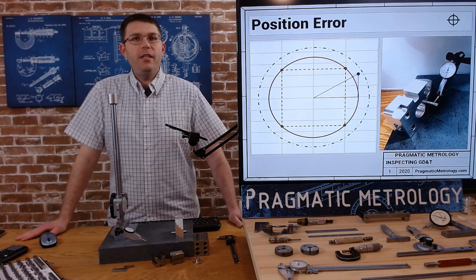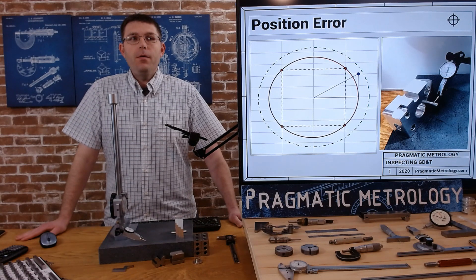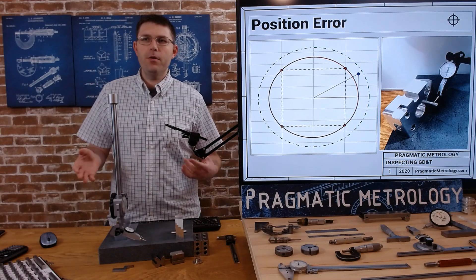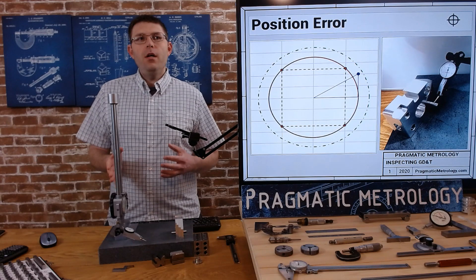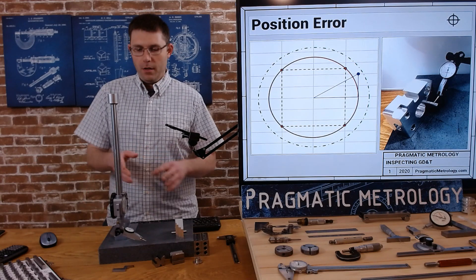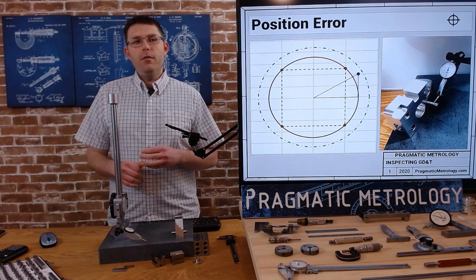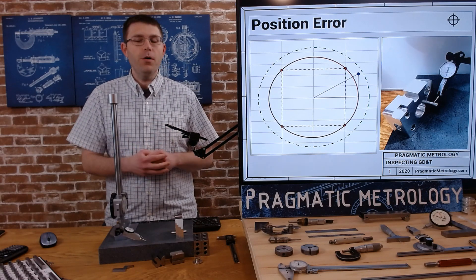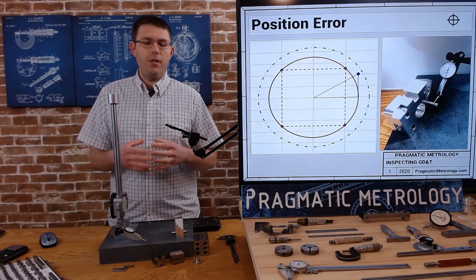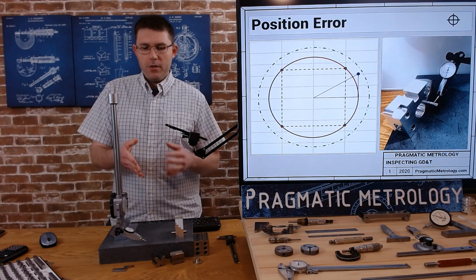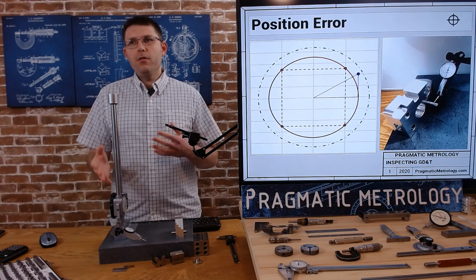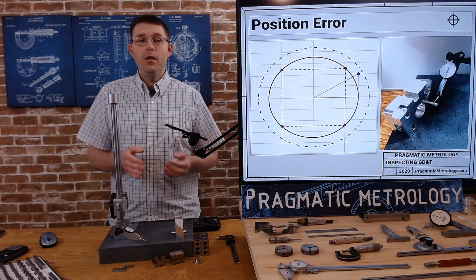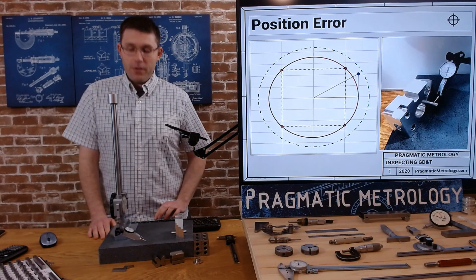When GD&T position error comes up, it doesn't really come down to how you measure it — whether it's with a height gauge, caliper, or whatever you want to use — that's the same. There's nothing really new there. The position error itself is more about understanding the tolerance zone than setting up a special fixture, like we did with straightness or concentricity. You still have to find the center point of a hole, and how you choose that is up to you. Let's talk about the tolerance.